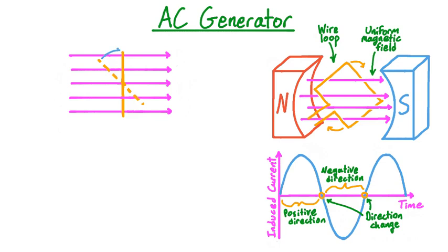In other words, in completing this portion of the rotation, the flux through the loop has increased. However, as the loop continues to rotate, it will now rotate away from its position perpendicular to the magnetic field. The result is that the loop will only cut across three field lines again, so the flux through the loop has decreased.